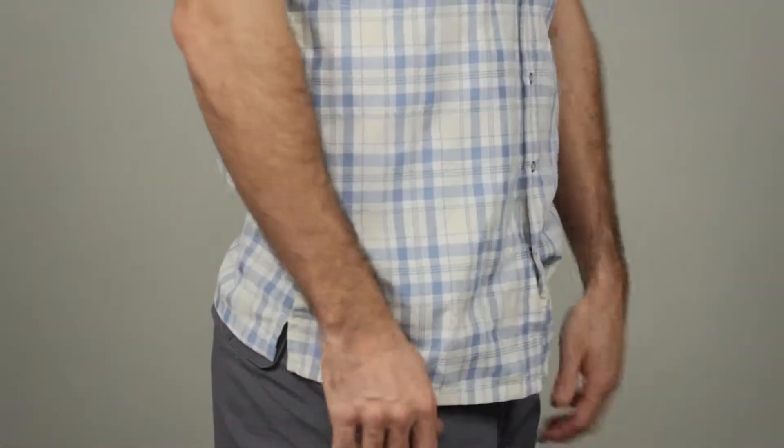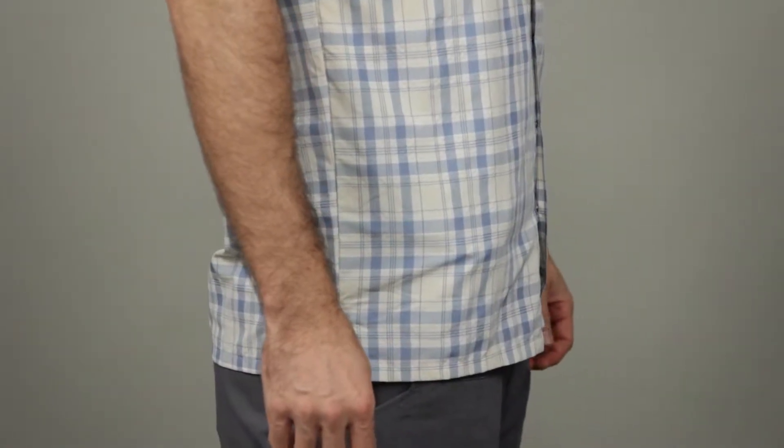Additional features include a generous length to assist in concealing your sidearm. This is the 5'11 Covert Shirt Performance.